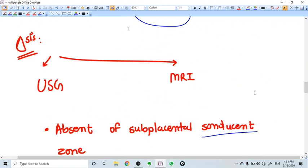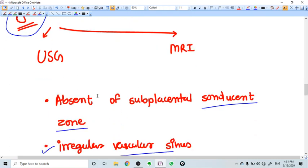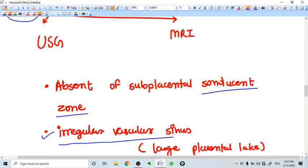How we diagnose this? Most of the time we diagnose the placenta adherent at the time of delivery, but sometimes yes, we diagnose it via USG. In USG what we see is we see absent subplacental sonolucent zone.